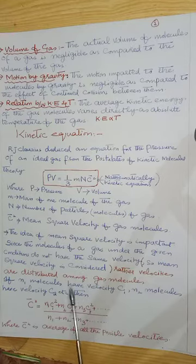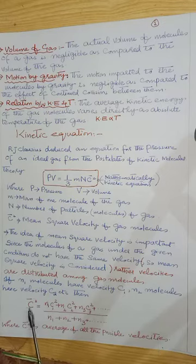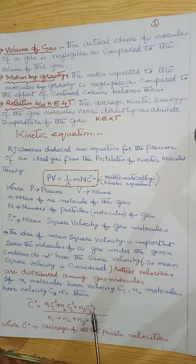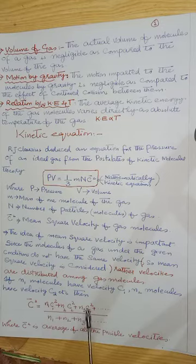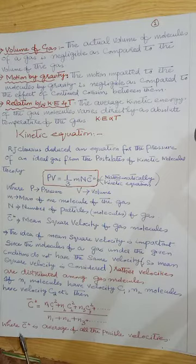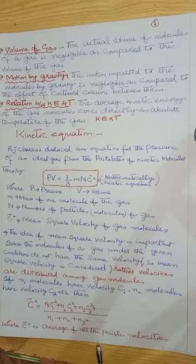If n₁ molecules have velocity c₁ and n₂ molecules have velocity c₂, then mathematically the mean square velocity c̄² equals (n₁c₁² + n₂c₂² + n₃c₃² + ...) divided by the total number of molecules, where n₁ + n₂ + n₃ + ... equals n. Here c̄² is the average of all the possible velocities.